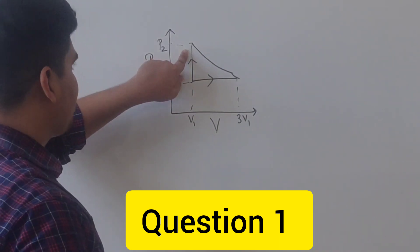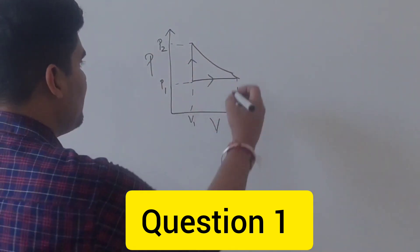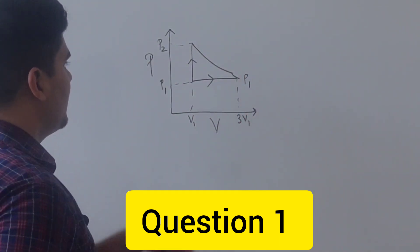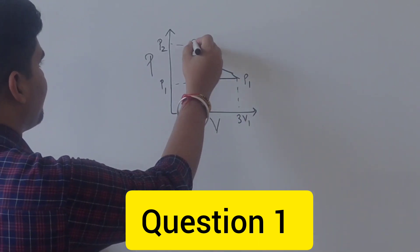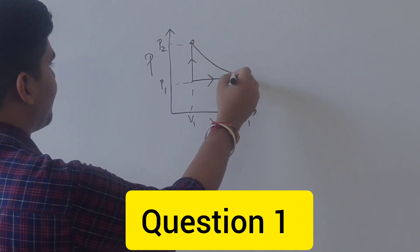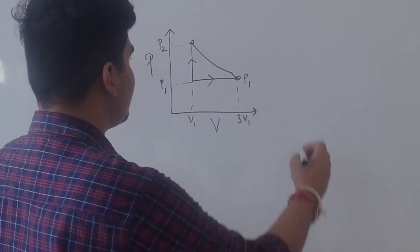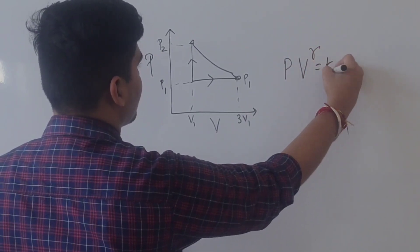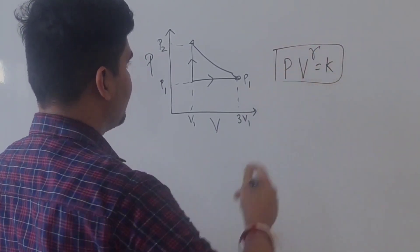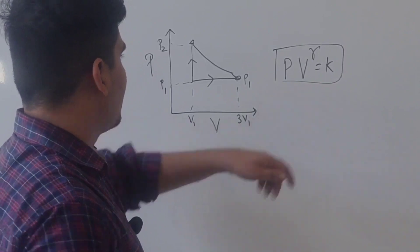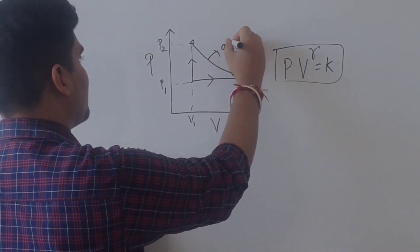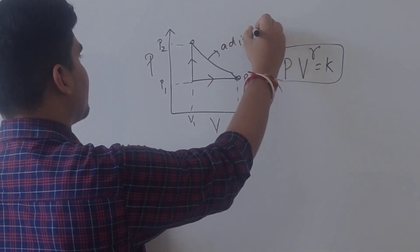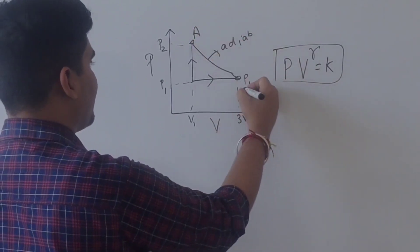If we look at this path, then we can find P2 by P1 using this equation. This is the adiabatic equation for the adiabatic process, because this is the adiabatic process. From A to B is adiabatic process.